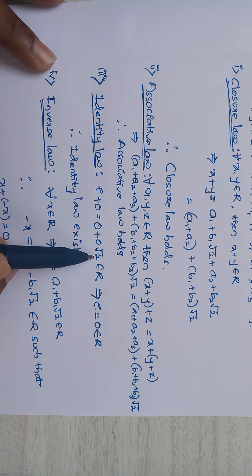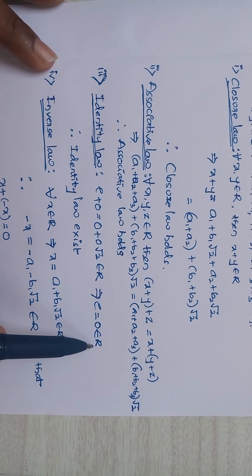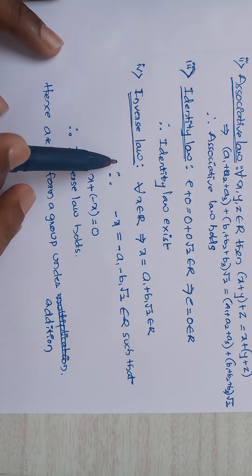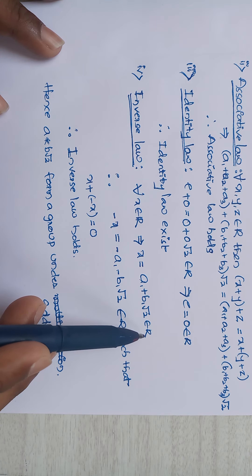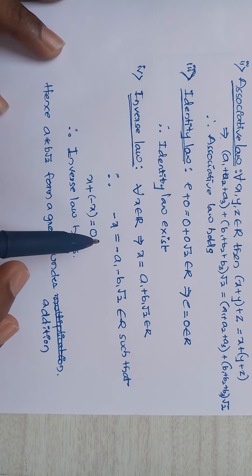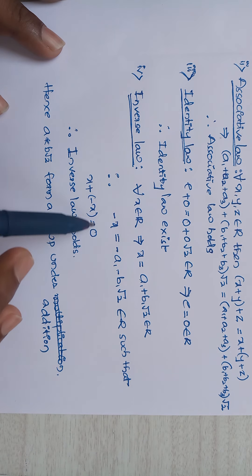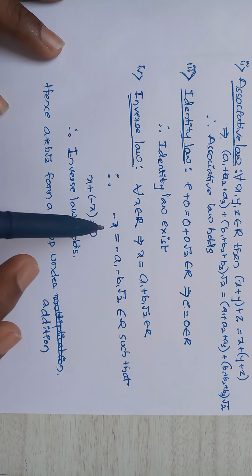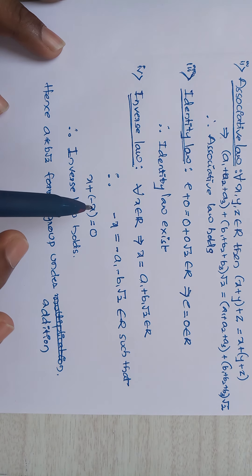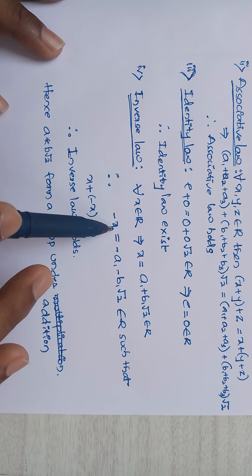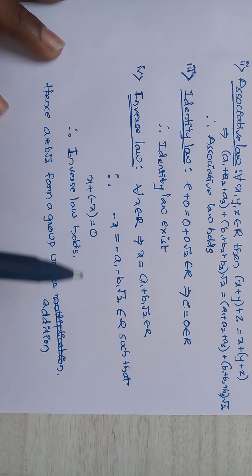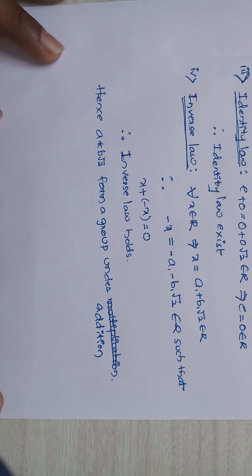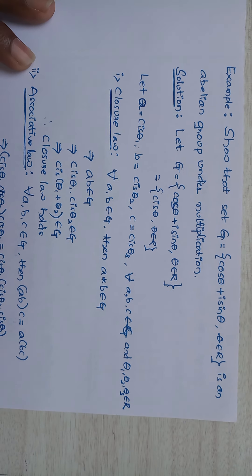Next, identity law: e = 0 + 0·√2 = 0, therefore e = 0 ∈ R, so identity law holds. Next, inverse law: for all x ∈ R, x = a1 + b1√2 ∈ R. The inverse element is −x = −a1 − b1√2, which belongs to R, such that x + (−x) = 0. Therefore inverse law holds. Hence {a + b√2} forms a group under addition.